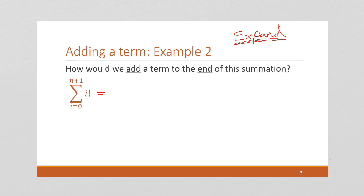Here we're starting i at 0, so this is 0! + 1! + 2! going all the way up to (n+1)!. I'll write one less: n! plus (n+1)! like that. So, if we want to add a new term to the end, we need to figure out what that new term is going to be.